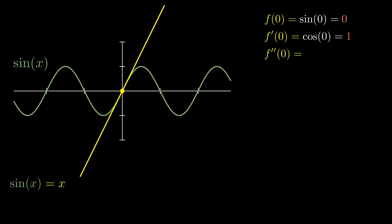At f double prime of zero, we have negative sine of zero, which is just zero. So that term will just go away. f triple prime of zero, which is negative cosine of zero, which is negative one.